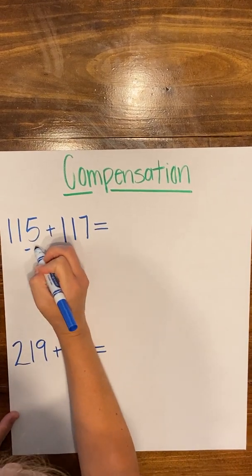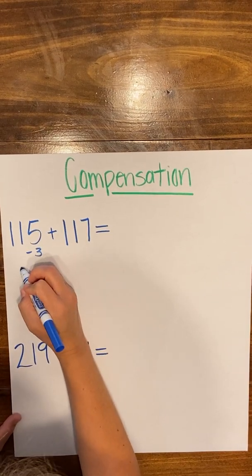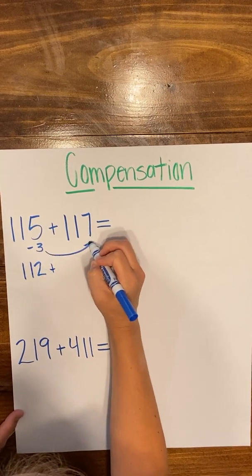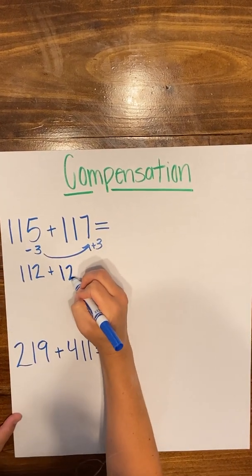So all I have to do here is take three from 115, which would give me 112, and I'm going to give it to the 117 to get 120.